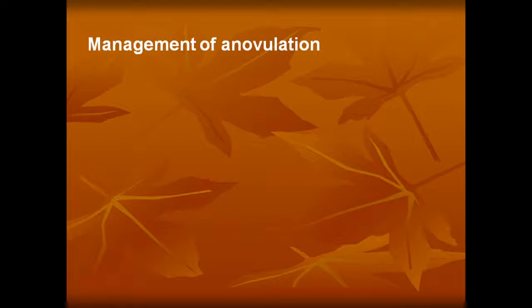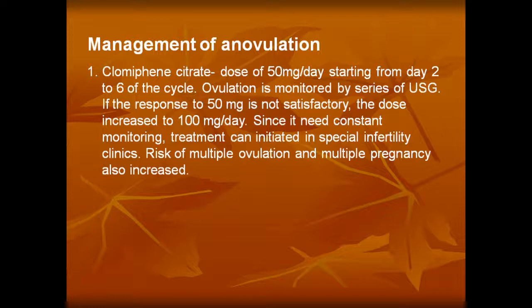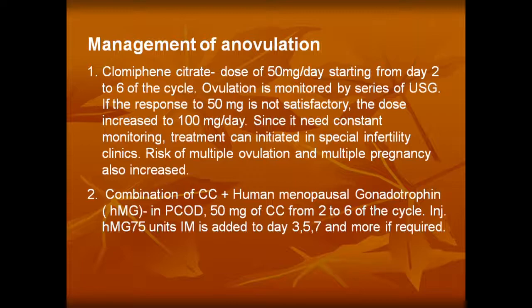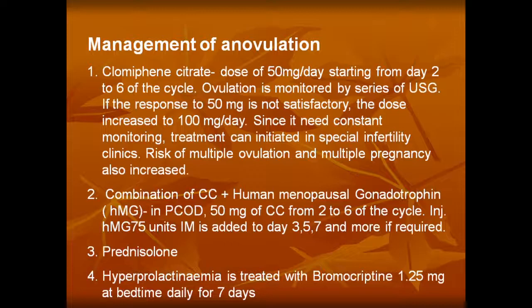Management of anovulation: clomiphene citrate 50 mg per day starting from the second to sixth day of the cycle. Ovulation is monitored by a series of ultrasounds. If response to 50 mg is not satisfactory, the dose is increased to 100 mg per day. The risk of multiple ovulation and multiple pregnancy are increased. Second is combination of clomiphene citrate plus human menopausal gonadotrophin in PCOD: 50 mg clomiphene citrate from days 2 to 6, plus HMG 75 units IM on days 3, 5, 7, and more if required. Third is bromocriptine — hyperprolactinemia is treated with bromocriptine 1.25 mg at bedtime daily for seven days.